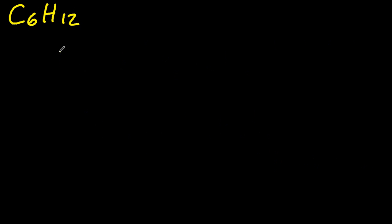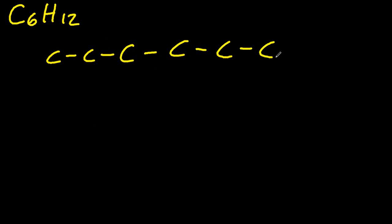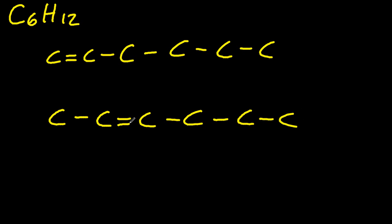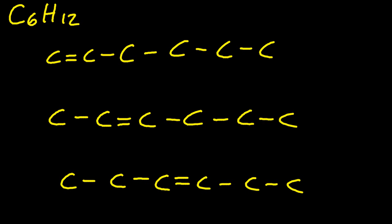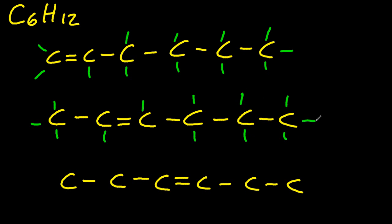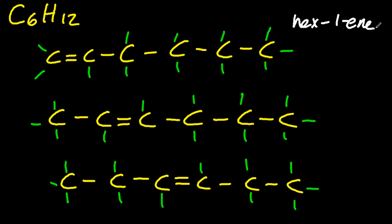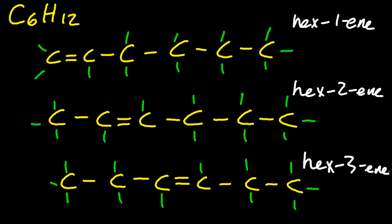Finally, hexene — six carbons in a row. 'En' means double bond, so it's a double bond between the first and second, second and third, third and fourth. There are other isomers, but if we're talking linear alkenes, it's just those three: six carbons in a row.